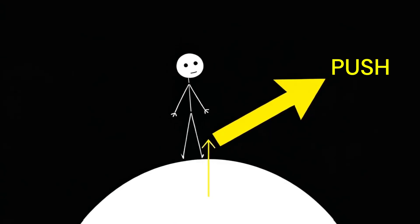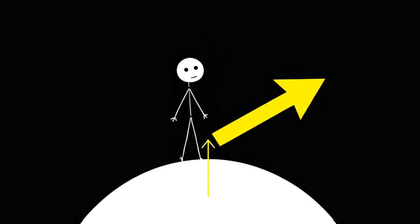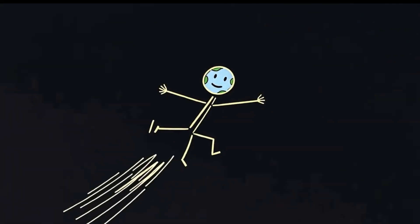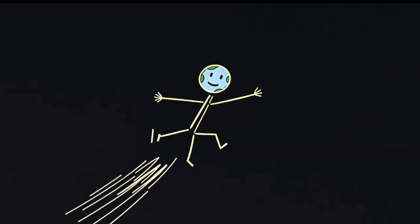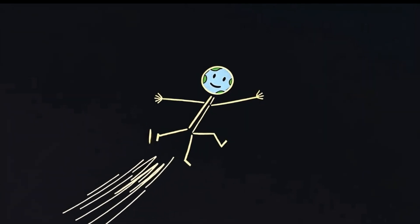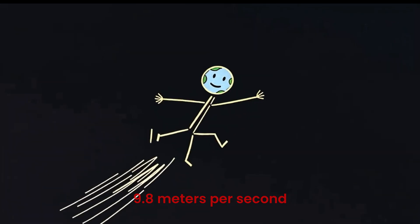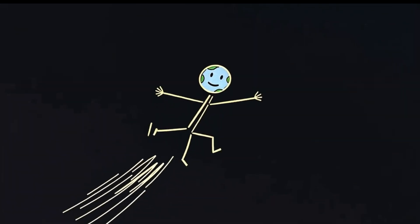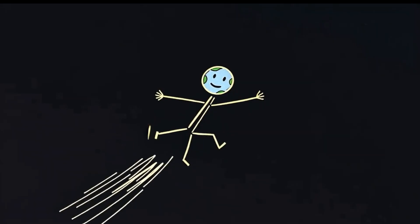The first thing that would happen, you wouldn't be here to ask this question. Because the moment gravity became a push, everything not physically attached to the planet would fly off into space at 9.8 meters per second squared. The exact speed objects currently accelerate toward Earth.